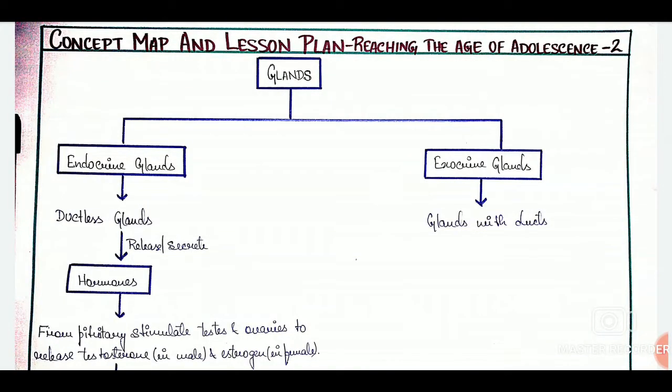Here's the second part of our lesson plan, reaching the age of adolescence. Again, it is from class 8, taken from NCRT textbook. And here, the main important keyword in the concept map is glands. So, I have put glands at the top.